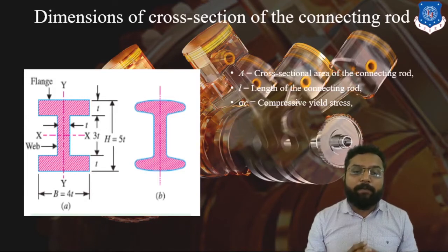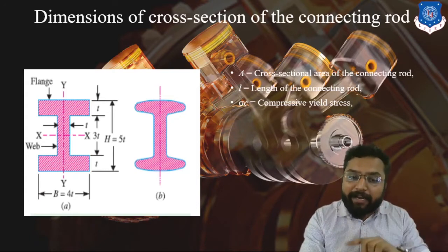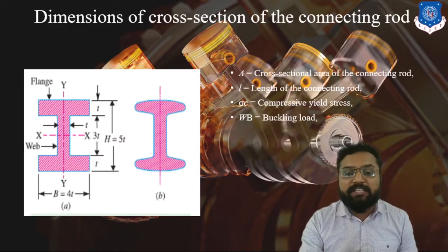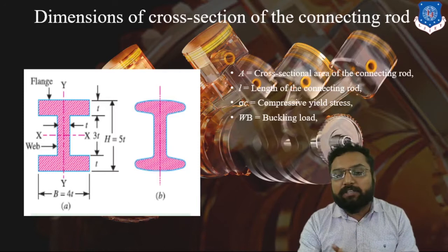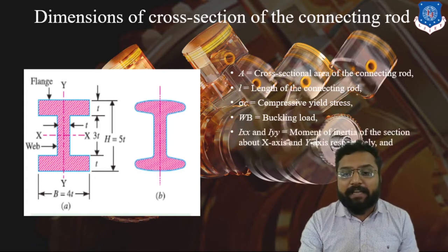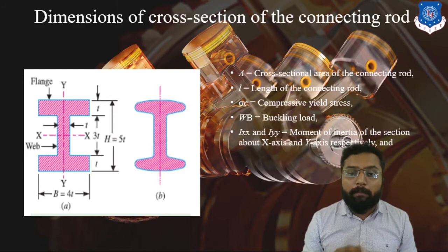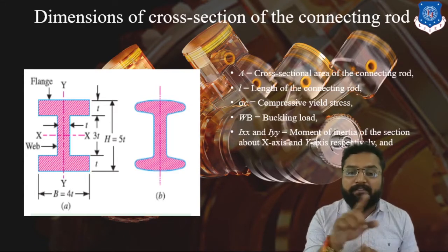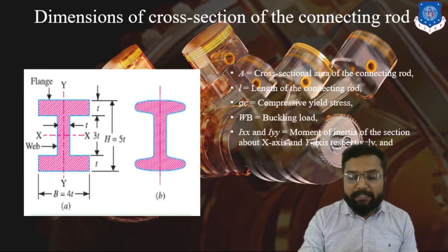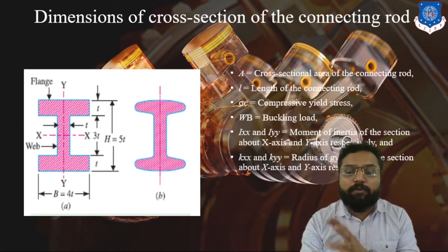Our connecting rod is subjected to compressive stress defined by Rankine's theory, and afterward it is subjected to different types of stresses. The load generated due to this compressive stress is called the buckling load. This buckling load will determine our cross-section — we must determine a cross-section area that can withstand this buckling load. Due to this buckling load, the rod can tend to buckle in the XX or YY direction. We must find the minimum moment of inertia where it can yield most easily, which is the radius of gyration applicable while considering moment of inertia.